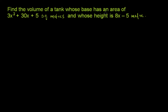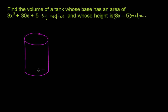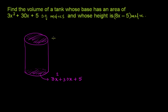Find the volume of a tank whose base has an area of 3x squared plus 30x plus 5 square meters and whose height is 8x minus 5 meters. We have a cylindrical tank, and the base area is given as 3x squared plus 30x plus 5 square meters. The height is given as 8x minus 5 meters.